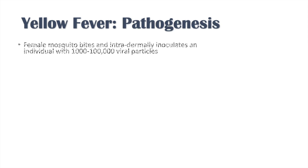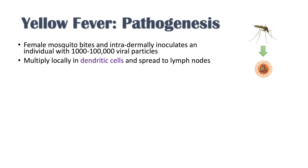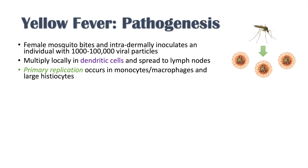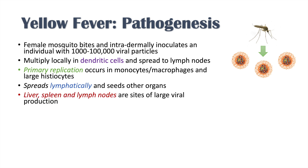Pathogenesis of yellow fever starts with a female mosquito biting someone and intradermally inoculating that individual with 1,000 to 100,000 viral particles. The virus multiplies locally in dendritic cells at the area of the bite and spreads to local lymph nodes. Then primary replication occurs in monocytes, macrophages, and large histiocytes, leading to lymphatic spread and seeding into other organs — the liver, spleen, and lymph nodes are generally the most affected sites.